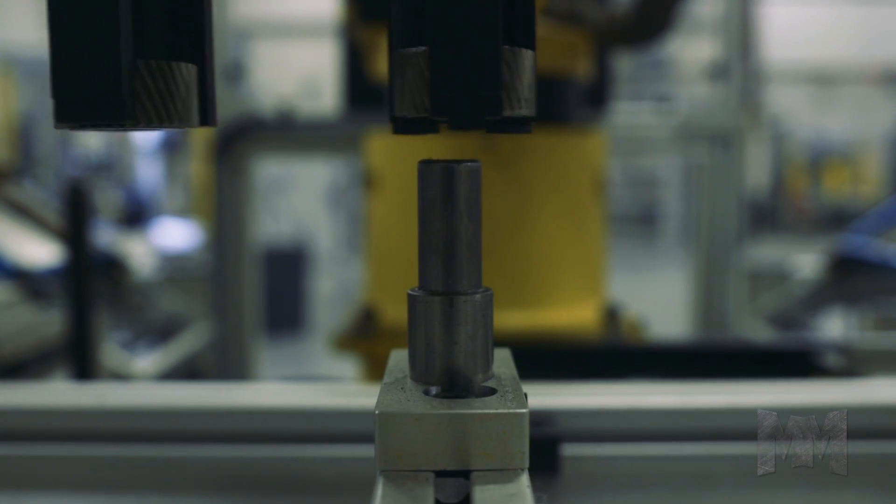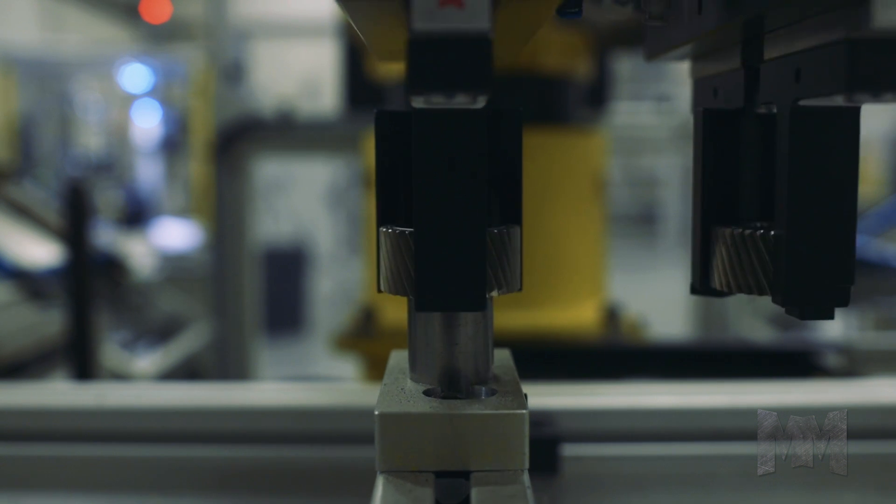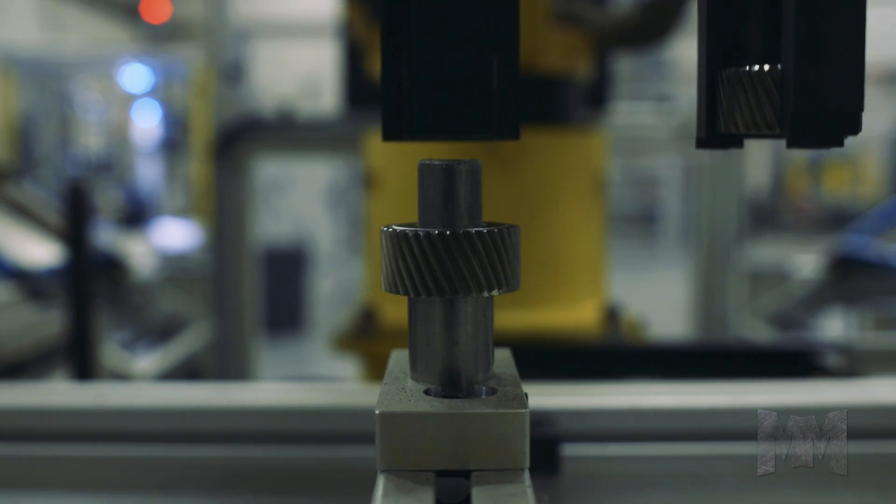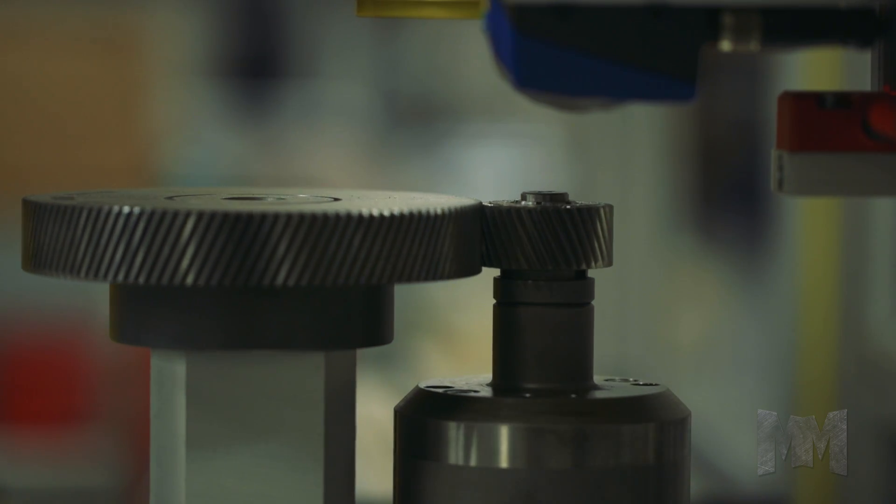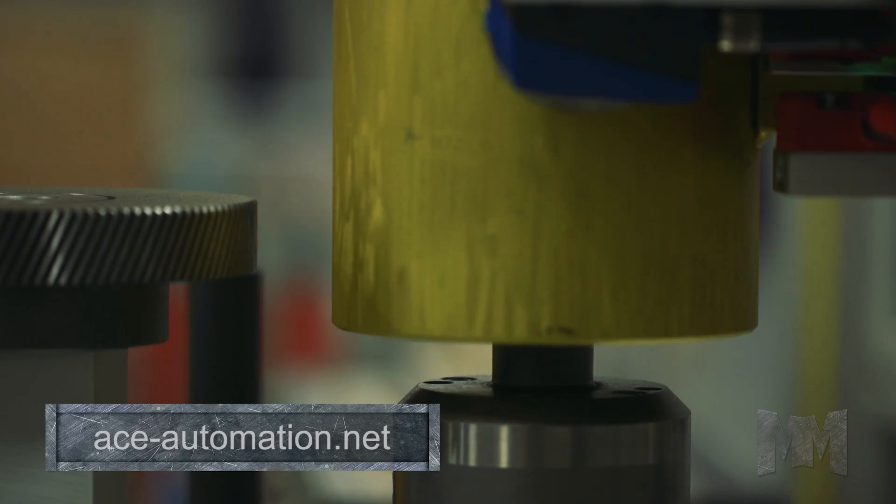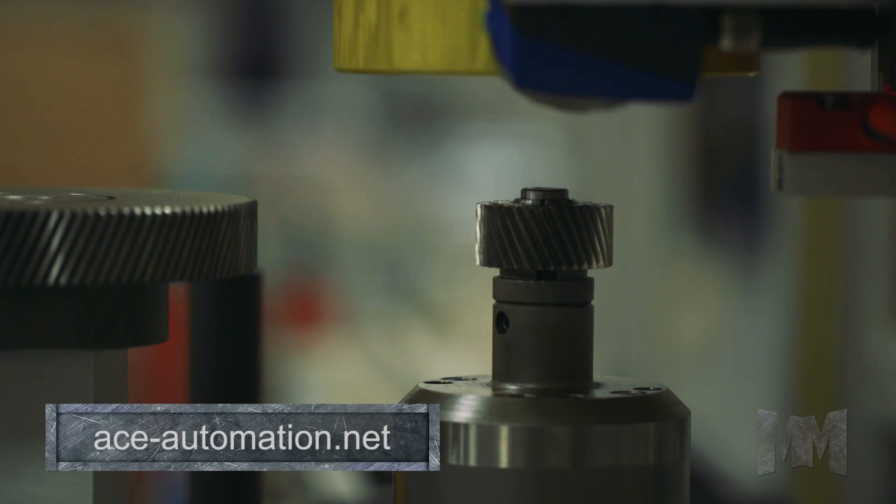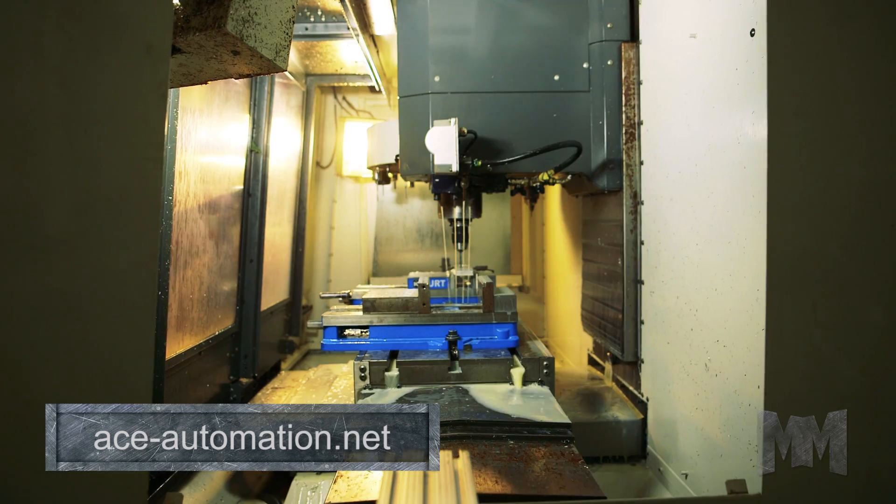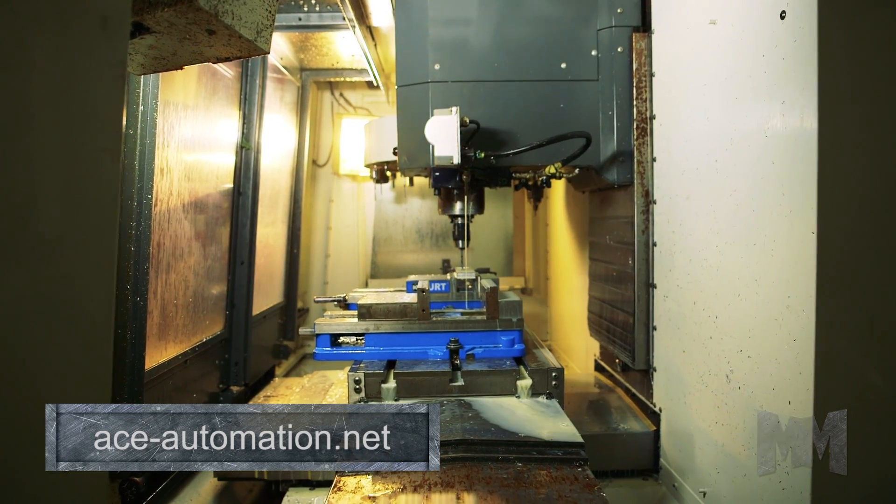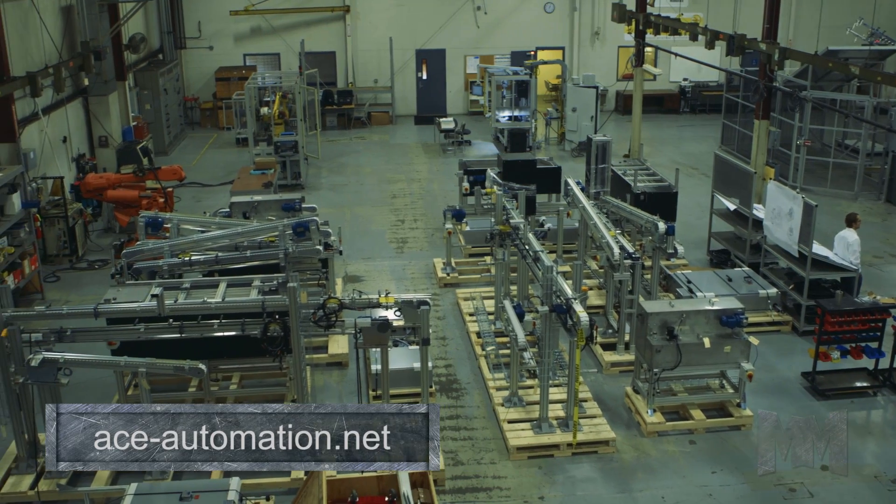ACE developed and patented an automation process that not only loads and unloads parts, but inspects and marks parts, all within the same robot cell. This eliminates the need for downstream gauging and marking equipment, removing the need for additional machinery, tooling, and floor space.